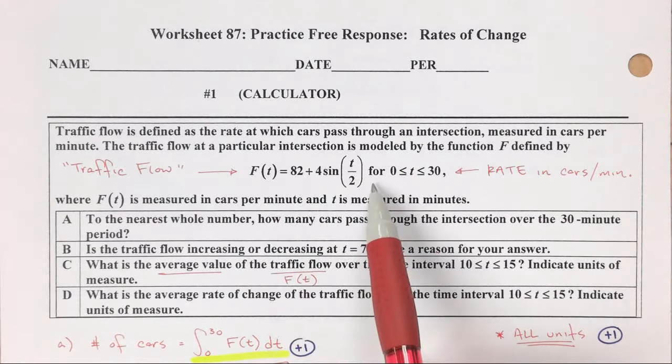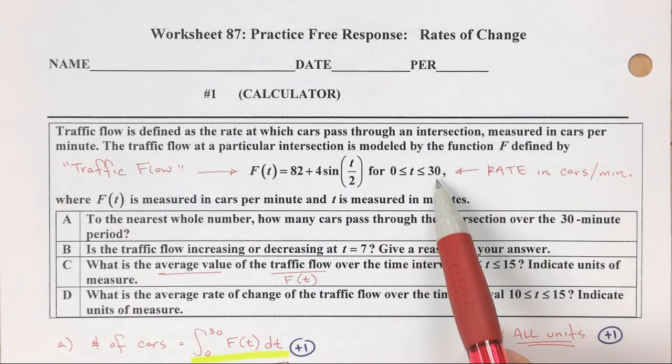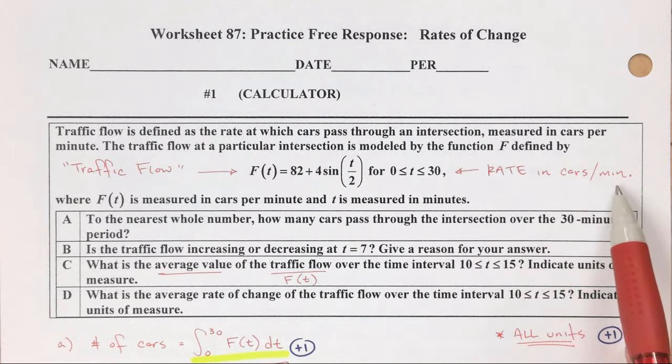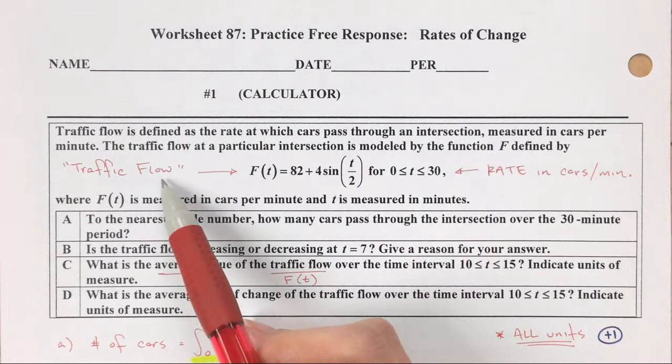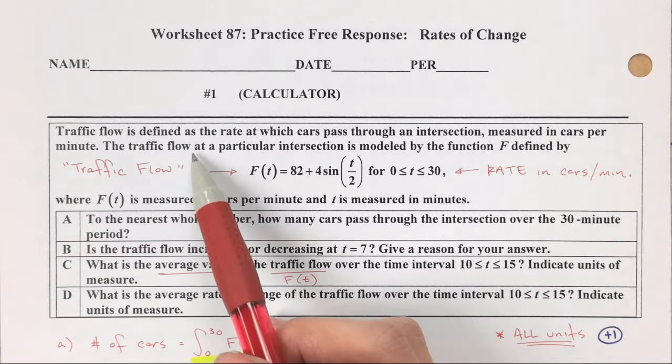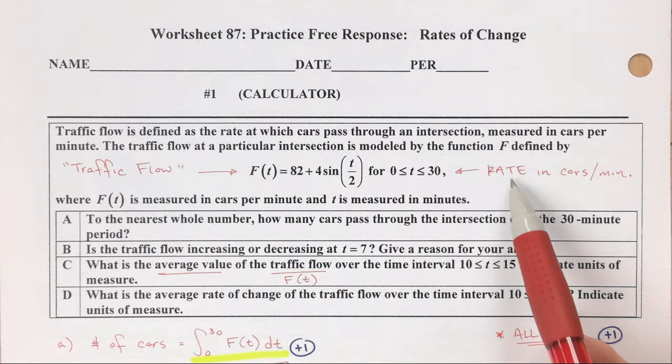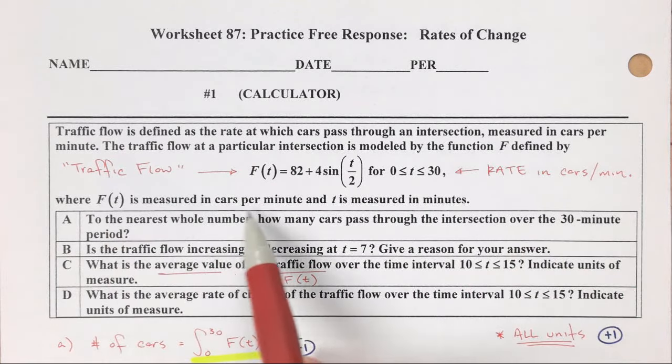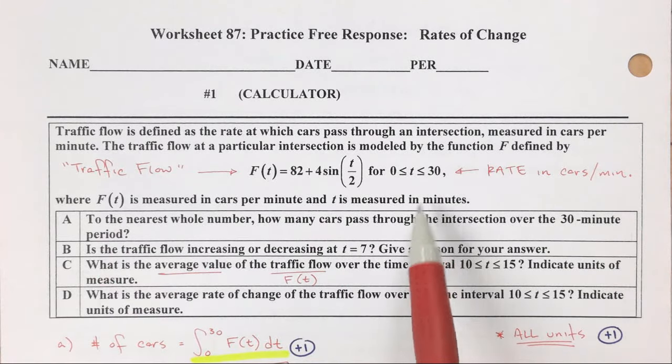this is the traffic flow between 0 and 30 minutes, and this is again a rate in cars per minute. So I like to just tell myself over and over again, this is specifically the traffic flow, and then this is a rate. This is a rate, which means that it is some sort of derivative function already. So f is measured in cars per minute, and t is measured in minutes. So we know this.